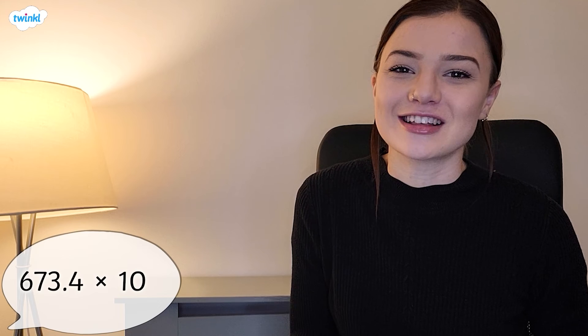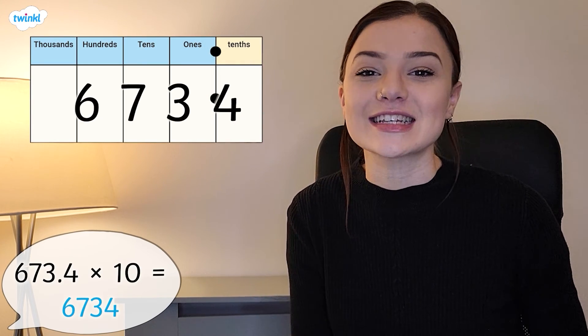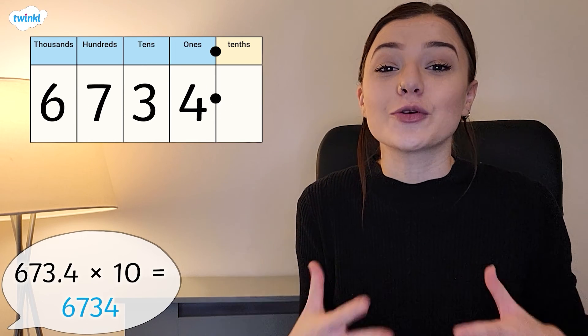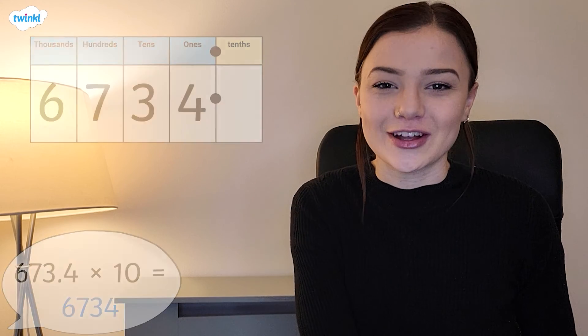Now let's check through your answer. 673.4 multiplied by 10 is 6734, as all of our digits have moved one place to the left. Very well done if you got that one right.